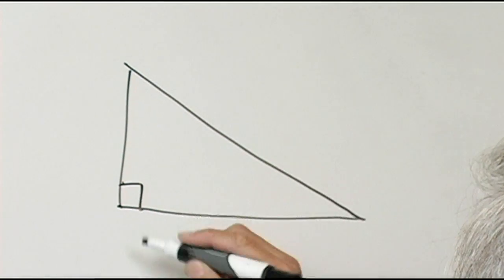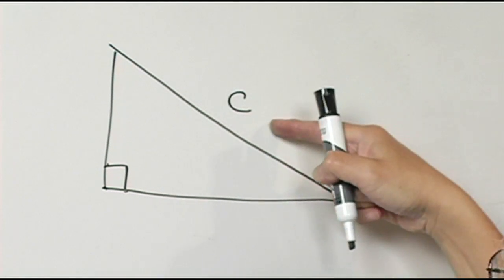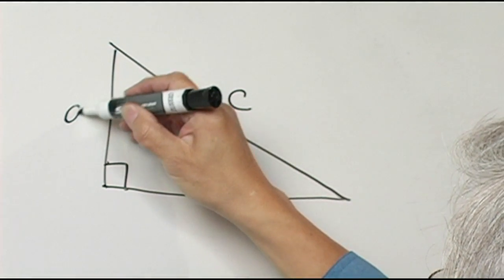Here's the right triangle. The hypotenuse is usually labeled C and the two sides A and B.